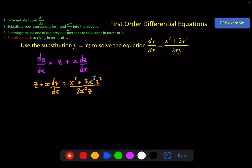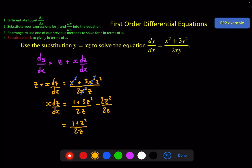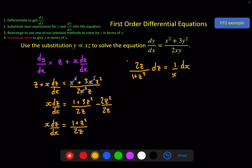So let's get rid of those terms first, which gives us (1 + 3z²)/2z, and bringing the z over gives minus z. Making that 2z²/2z so they can become one fraction, we get x·dz/dx = (1 + z²)/2z. You can see now that we can separate the variables. Multiplying 2z over, dividing by (1 + z²), and multiplying by dx gives 2z/(1 + z²) dz = (1/x) dx. Integrating both sides — the left is a function under its own derivative and doesn't even need to be modified.